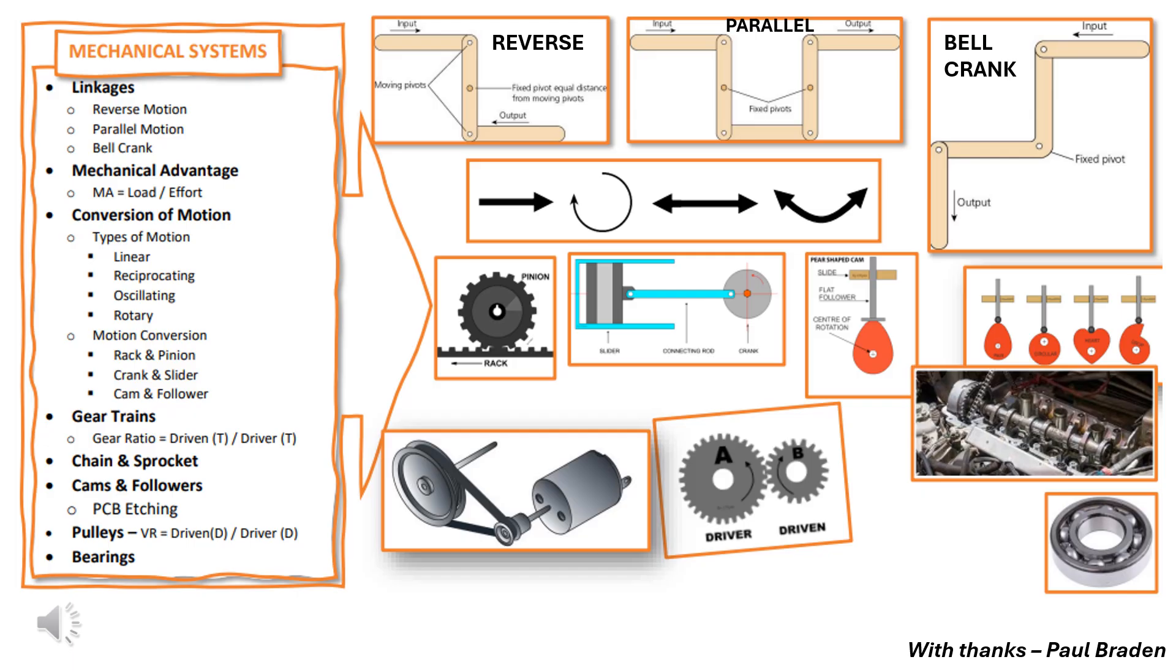With a parallel motion this type of linkage has two pivots, the others are moving pivots. So you've got the input and the output movement going in the same direction. The input force and the output force are exactly the same. They're connected and parallel to each other.